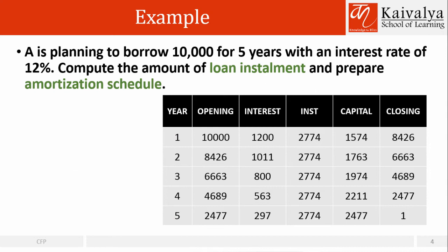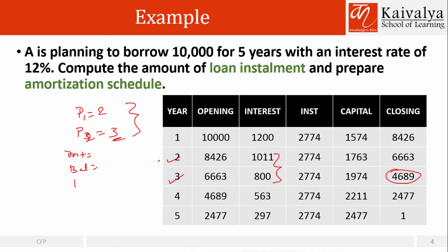Now, for example, if I say P1 equals 2 and P2 equals 3, what do you feel it is going to suggest? It will give me the interest, principal, and all components of which two installments — obviously between installment 2 and 3. So the interest the calculator suggests will be the total of those two. The balance shown will be the balance after payment of installment number 3, and the principal component will once again be the total of those two. I hope you are now very clear with this calculation.